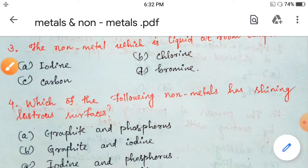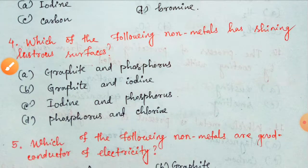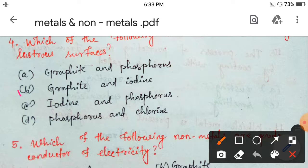Next, Question Number 4. Which of the following non-metals has shining, lustrous surfaces? Graphite and Phosphorus, Graphite and Iodine, Iodine and Phosphorus, Phosphorus and Chlorine. Generally, metals have shining surfaces. But here, the question is about non-metals. Your correct answer is Graphite and Iodine. Option B. Graphite, which is a crystalline form of Carbon, and Iodine, these two have shining, lustrous surface. So your option B is correct.